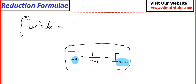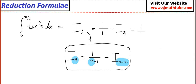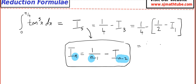Now applying the reduction formula: I₅ = 1/(5-1) - I₃ = 1/4 - I₃. Then I₃ = 1/(3-1) - I₁ = 1/2 - I₁. Since I₁ = log(√2), we get I₅ = 1/4 - (1/2 - log(√2)) = 1/4 - 1/2 + log(√2), which gives I₅ = log(√2) - 1/4.